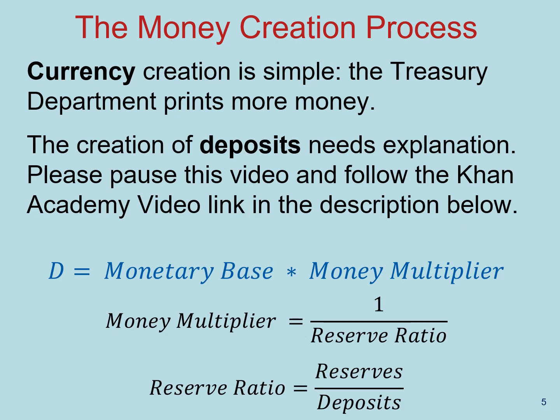To summarize: deposits equals the monetary base times the money multiplier. The monetary base is currency in circulation and reserves that the banks hold in their accounts at the Federal Reserve. The money multiplier is 1 divided by the reserve ratio, which is defined as the ratio of reserves to deposits currently in the banking system. Please take your notepad or index cards and write these formulas down, as we're going to use them for exercises in the future.